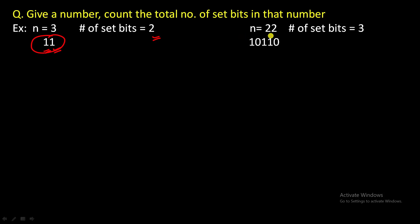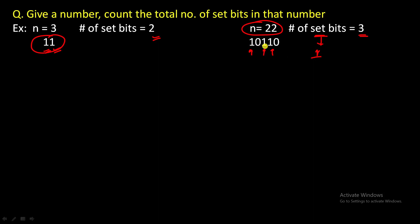For example, if you are given 22 as input, the binary representation of 22 is 10110. How many bits are 1 in this number? This is 1, this is 1, and this is 1 — so there are total 3 bits which are 1. All the remaining 2 bits are 0, so there are total 3 bits which are basically set.